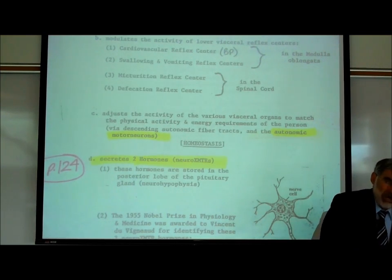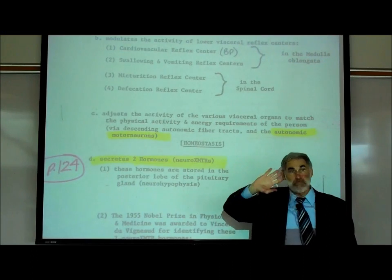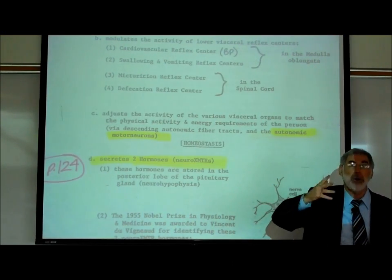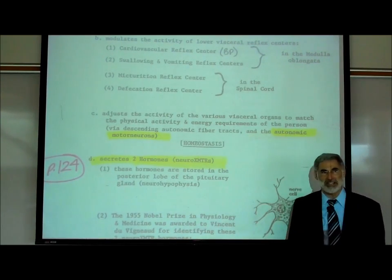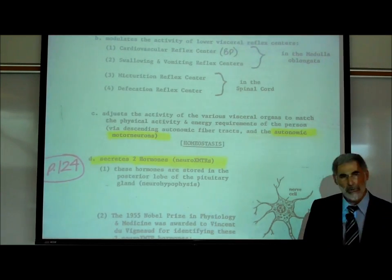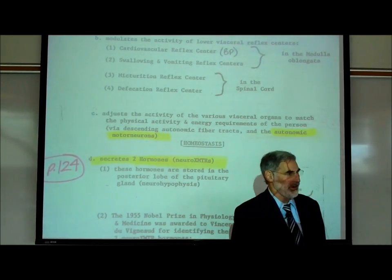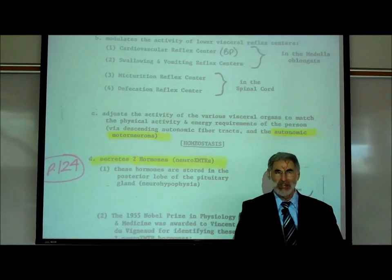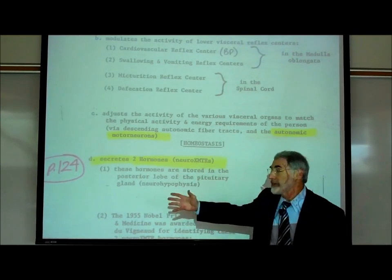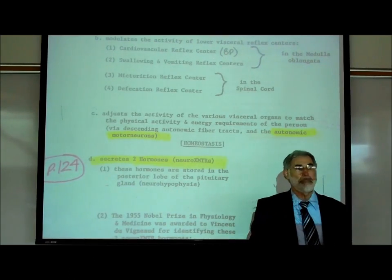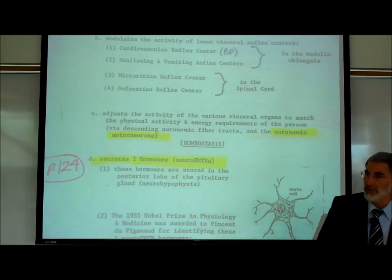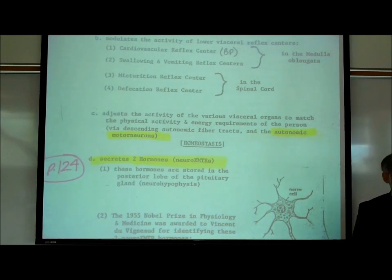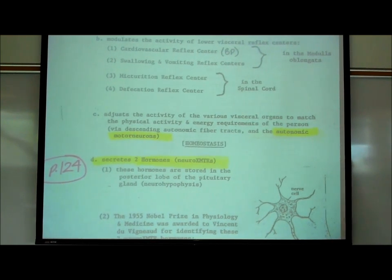If you want to exercise and start running, then your hypothalamus, using your sympathetic autonomic motor neurons, powers up the heart, opens up the airways, and dilates blood vessels to skeletal muscles while powering down the stomach and kidneys. Conversely, if you sit down for a nice meal and are relaxed, the hypothalamus activates the parasympathetics to power up the salivary glands and power down the heart. That's the essence of homeostasis.